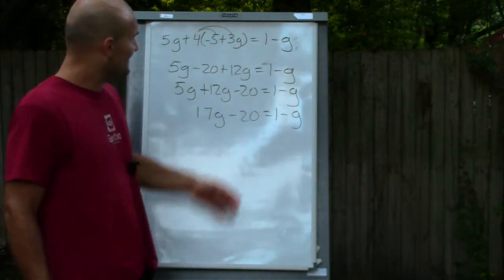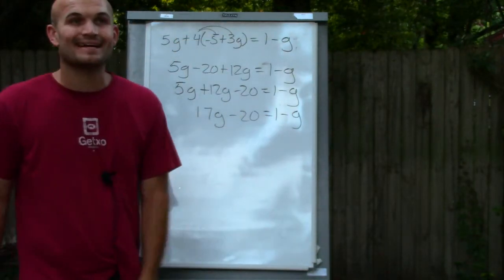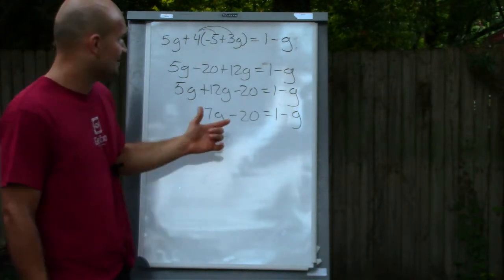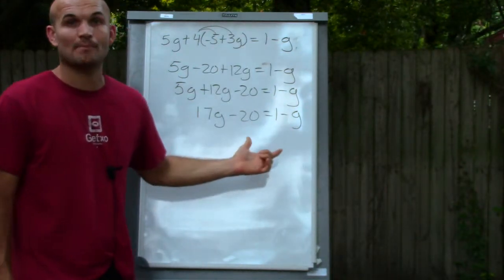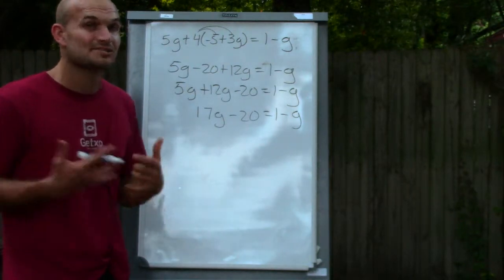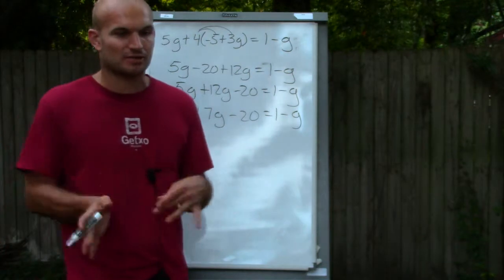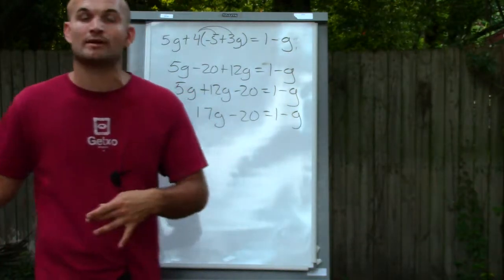So now we simplified, but we're still not at a two-step equation. So hopefully what you see here is I have a g on both sides or a variable on both sides. So we need to get the variables on the same side to solve for a variable.